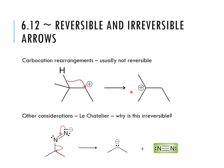One other consideration: when nitrogen is a leaving group producing N2 gas, we draw a regular reaction arrow. Le Chatelier's principle tells us that if we remove a product (N2 bubbling away), the reaction shifts toward the product side, so it won't be going back and forth between reactants and products.